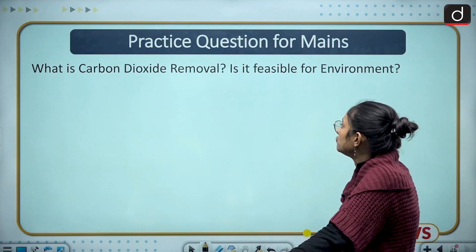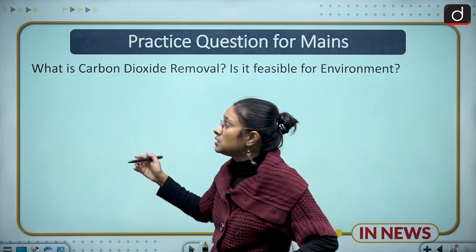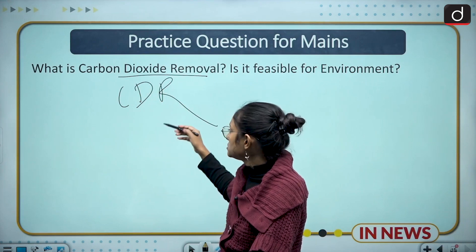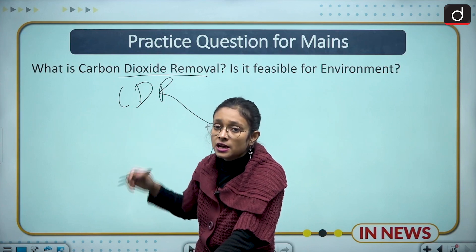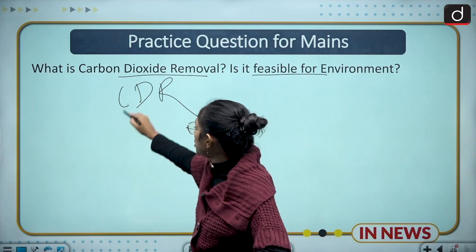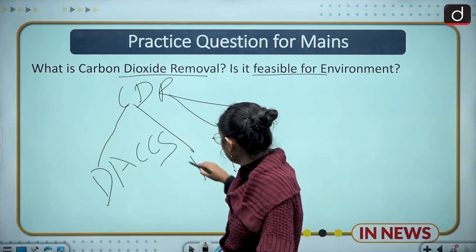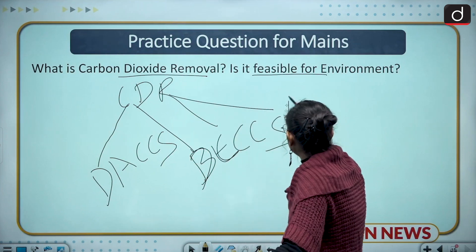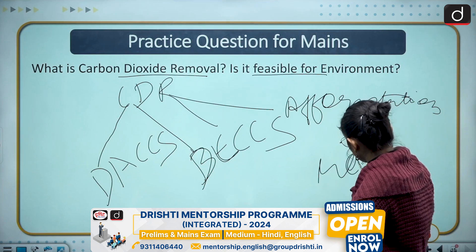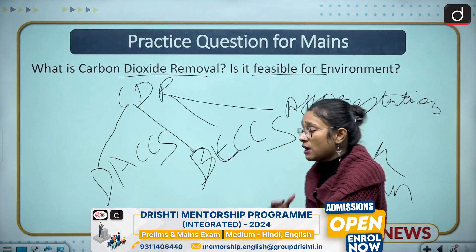The mains question asks: What is Carbon Dioxide Removal and is it feasible for the environment? First introduce CDR, mention that COP 28 and UNEP have given special focus to it, then address environmental feasibility. You can draw a flow chart of CDR methods: DACCS, biochar, BECCS, afforestation, rock weathering, and ocean alkalinity enhancement.